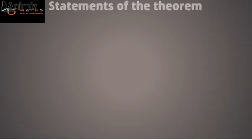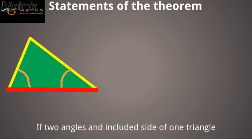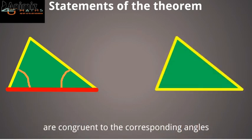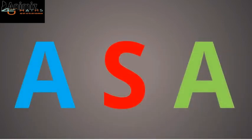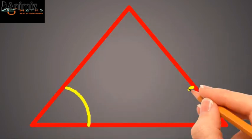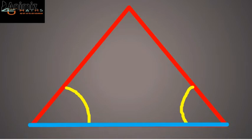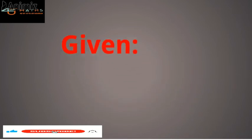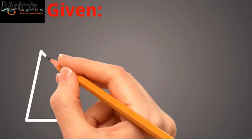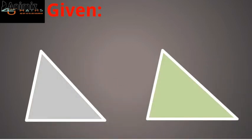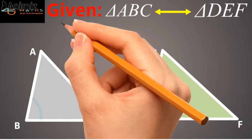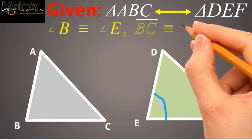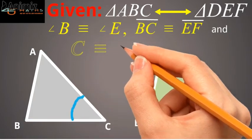Statement of the theorem: if two angles and the included side of one triangle are congruent to the corresponding angles and included side of another triangle, then the triangles are congruent. This theorem can also be remembered as the angle-side-angle congruence theorem, as it uses two angles and their included side of the triangle.